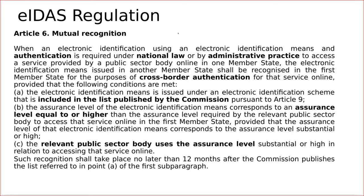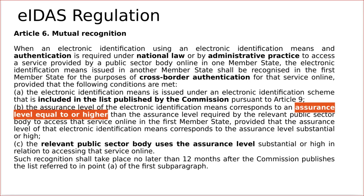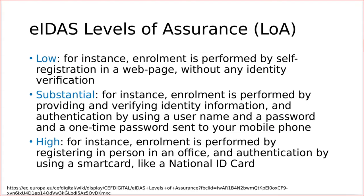There is also a very important article that tells us about assurance levels of identification schemas. There are not one but three levels: low, substantial, and high. For different purposes and different public services or businesses, you can use different levels. The required level for your public services is fully based on the national regulation of the country, so you can choose which level to use and you can use that level or higher.